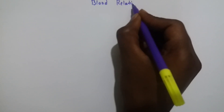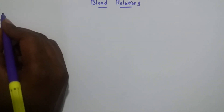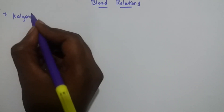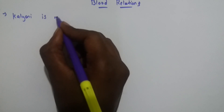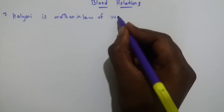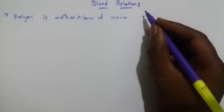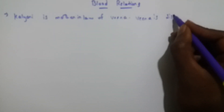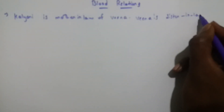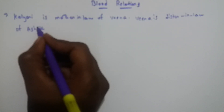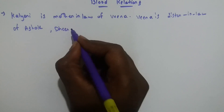Hi friends, now we are going to see the problems based on blood relations. The first problem here is: Kalyani is the mother-in-law of Veena. Veena is the sister-in-law of Ashok.